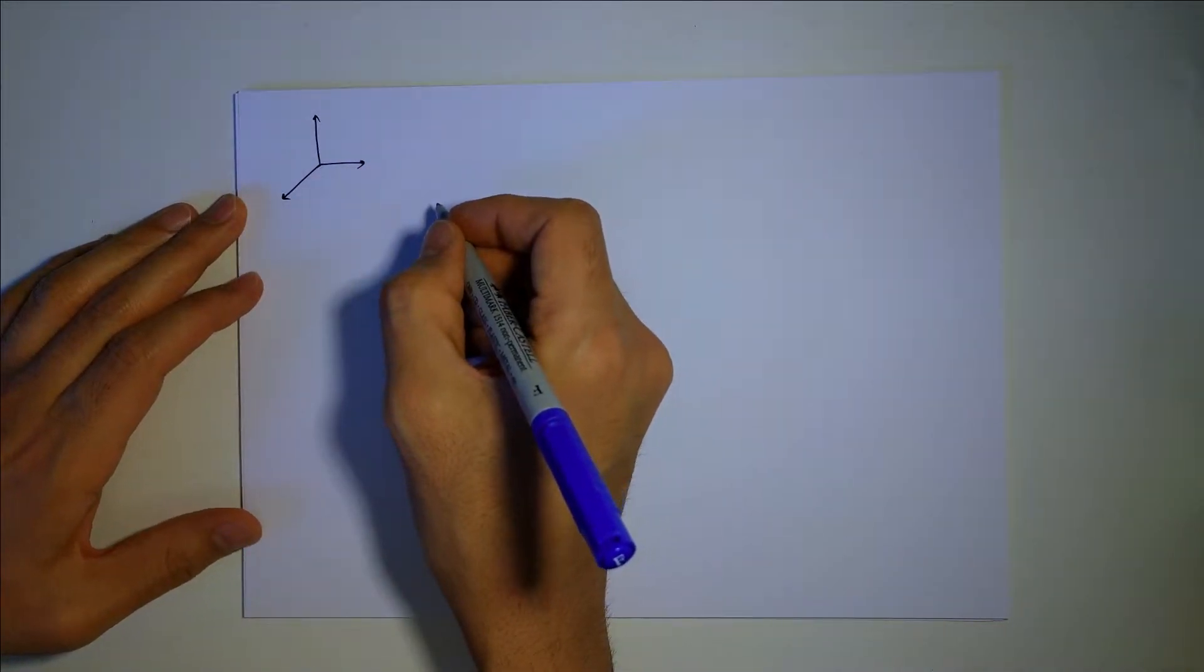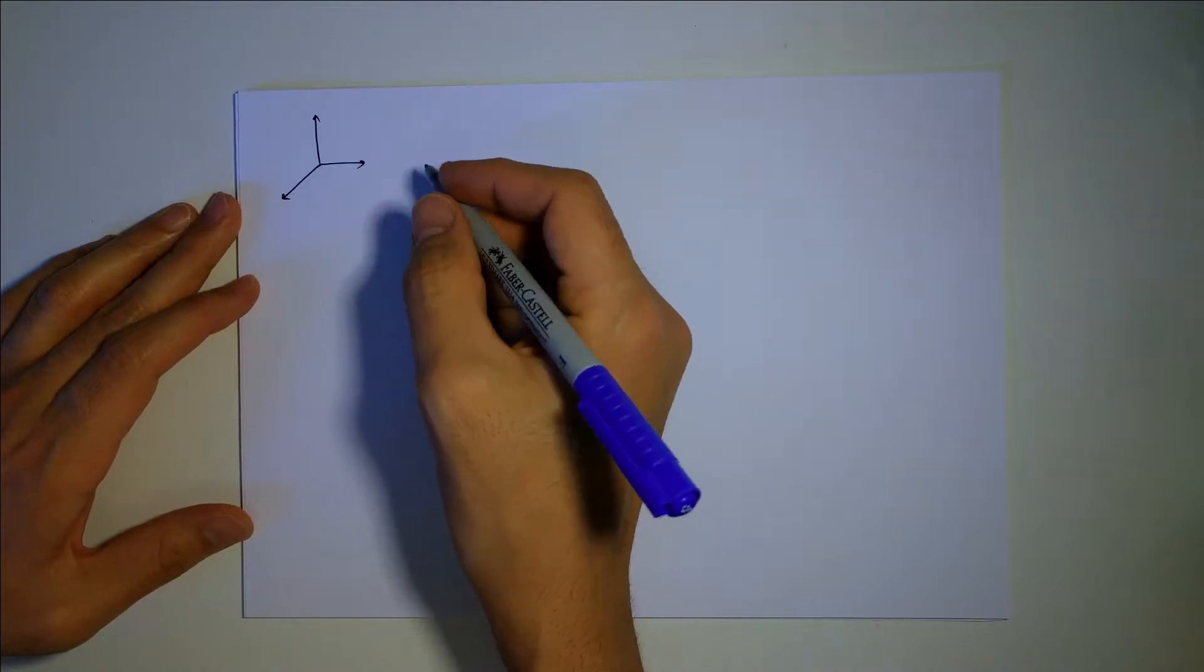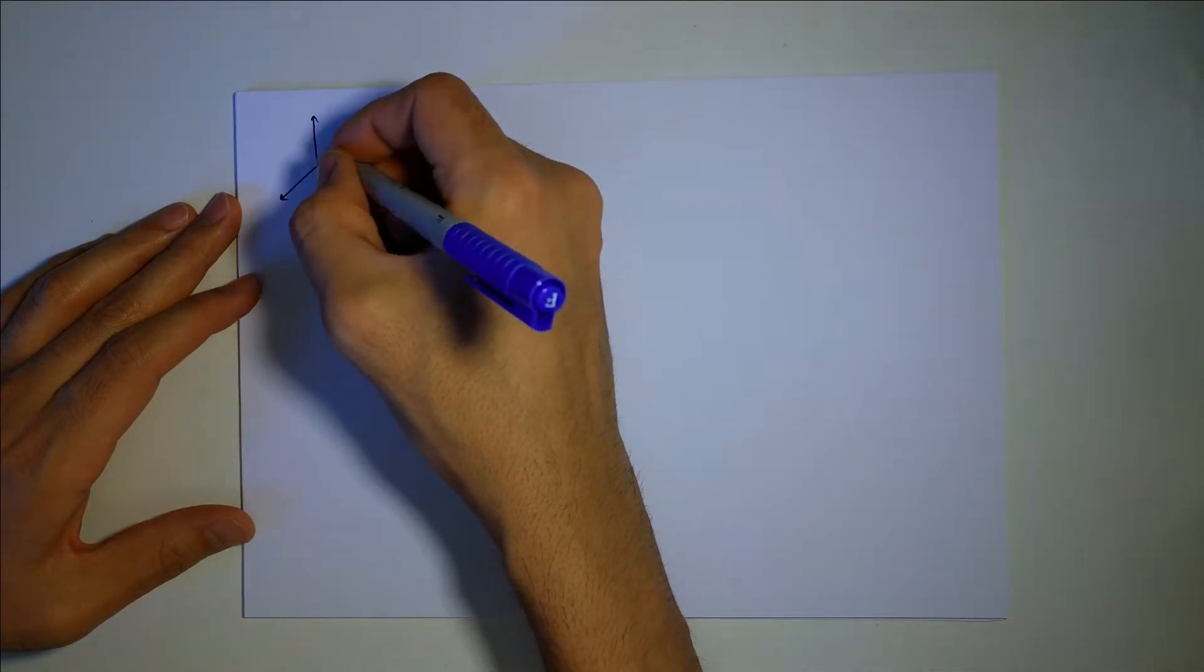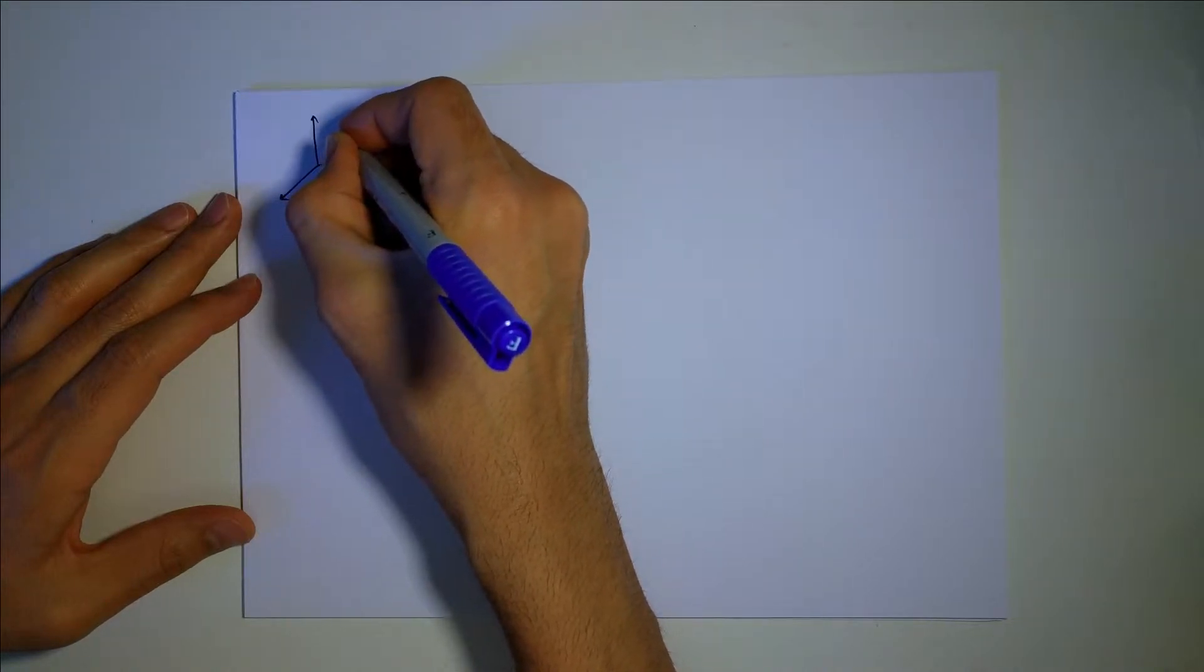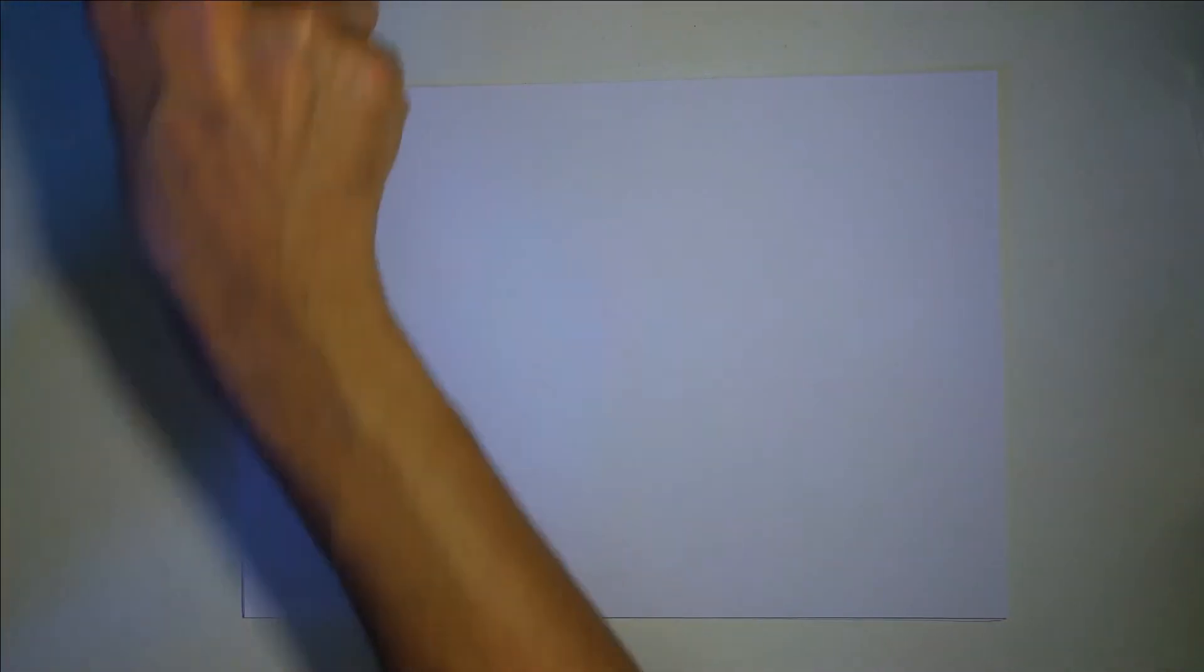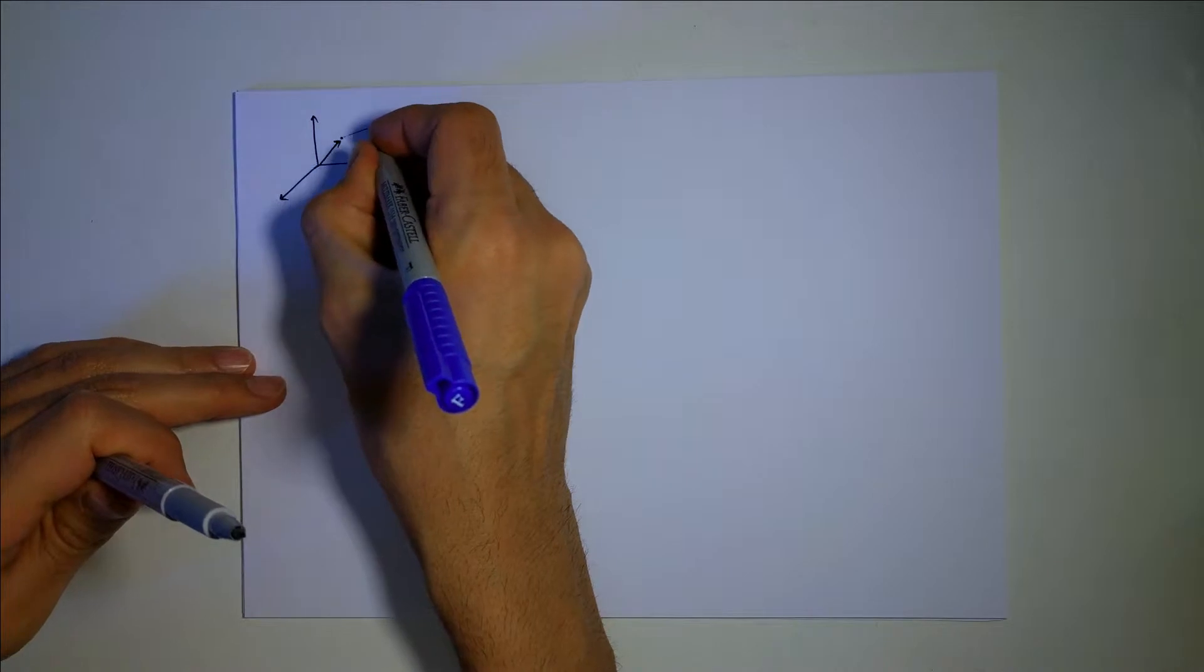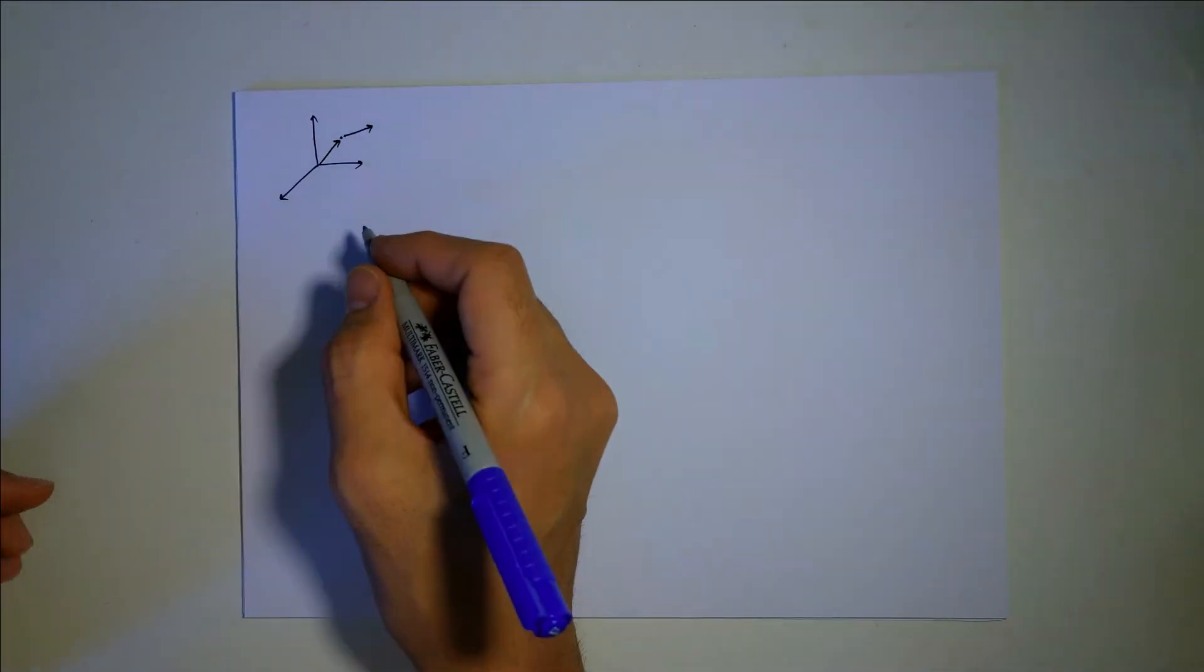So what you need for a line is a point that your line goes through and the direction. So imagine this is your point, you can always show it with a vector, and this is the direction that you have. So this is your point, and this is the vector representing the direction that you want the line through.